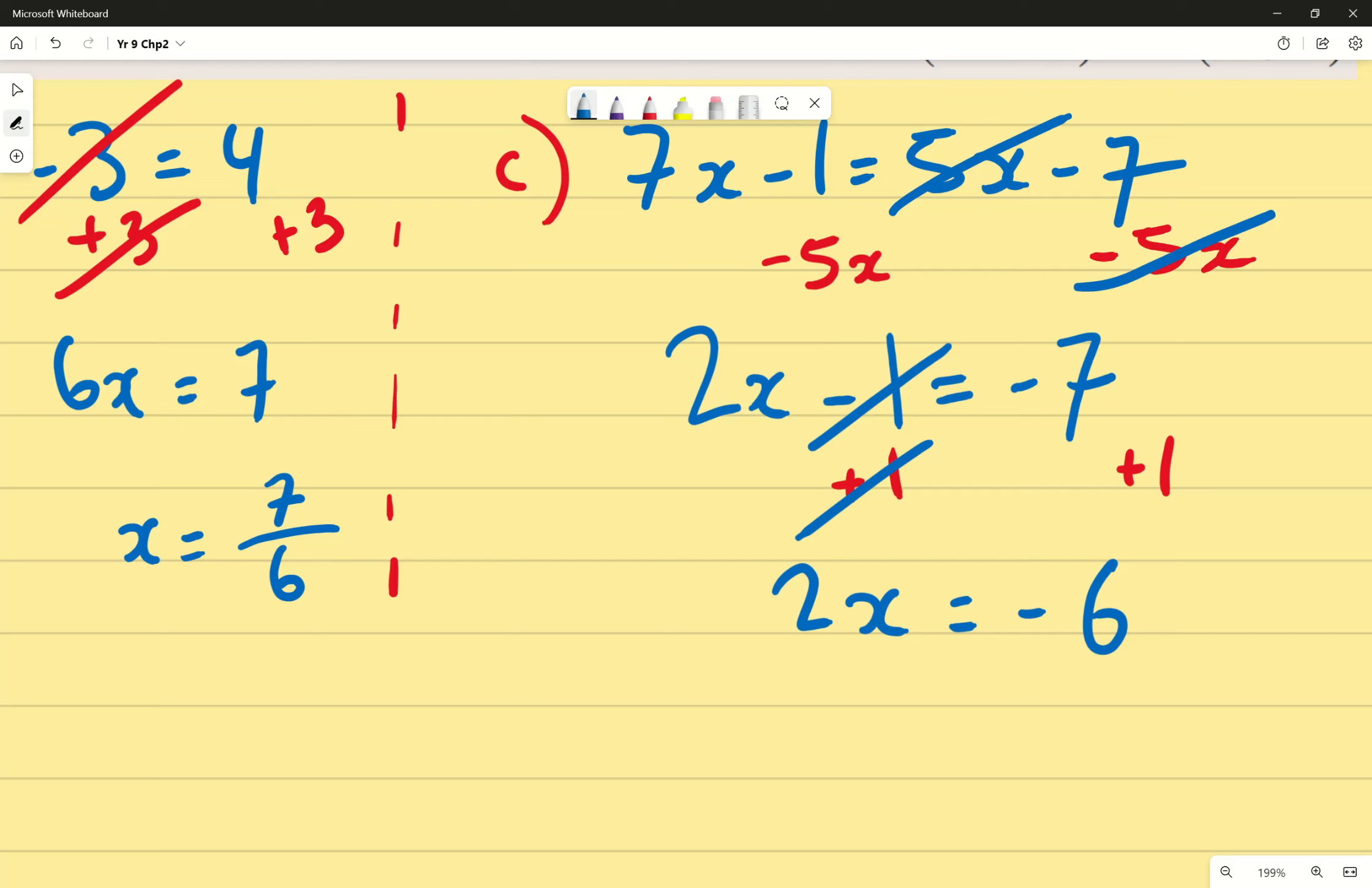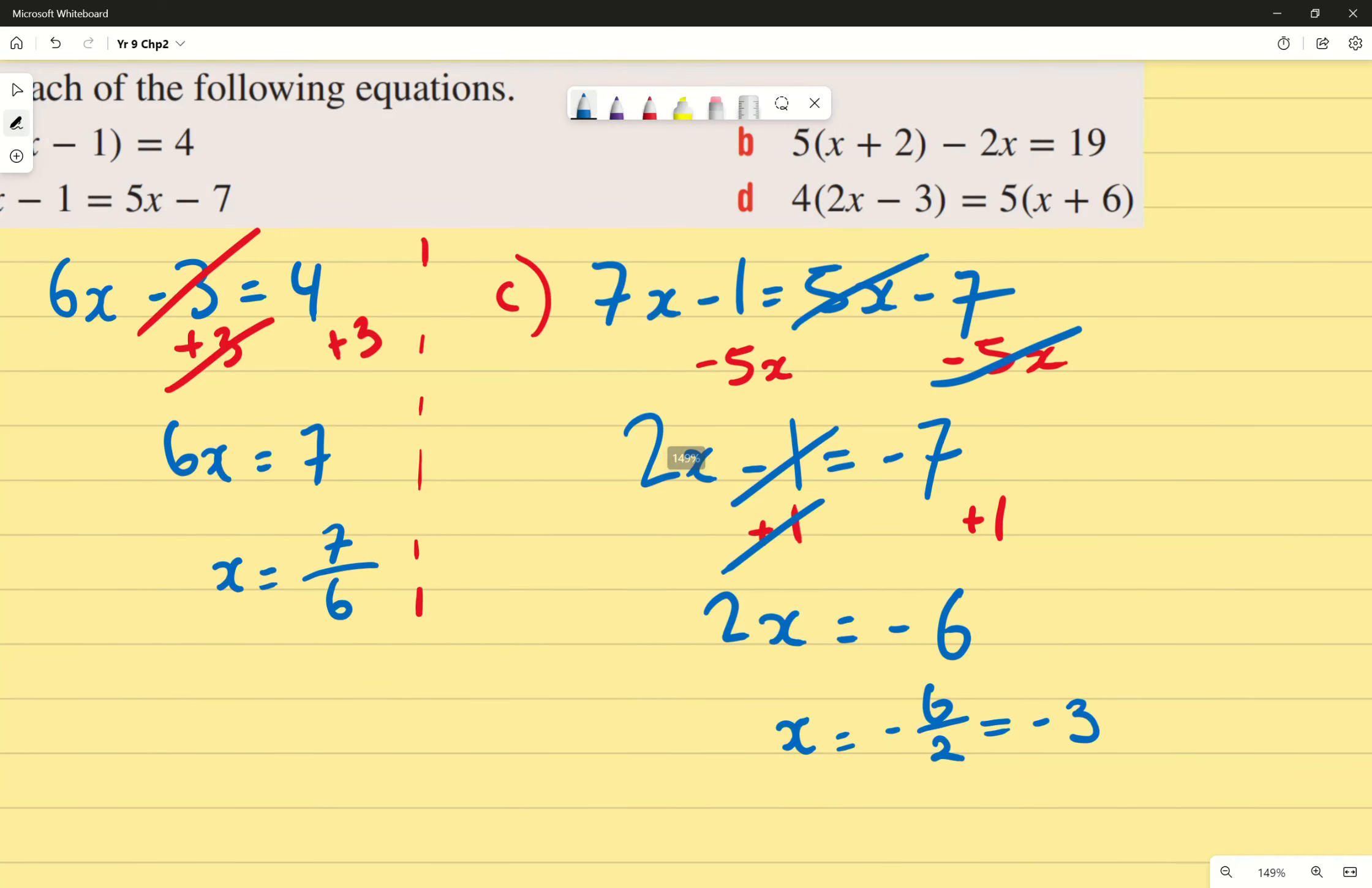x equals to negative 6 on 2. Why is that not my final answer? Thank you very much, because I can simplify it. 6 divided by 2 is 3. So negative 6 over 2 would just be negative 3. Done. Great. Any questions about that one?